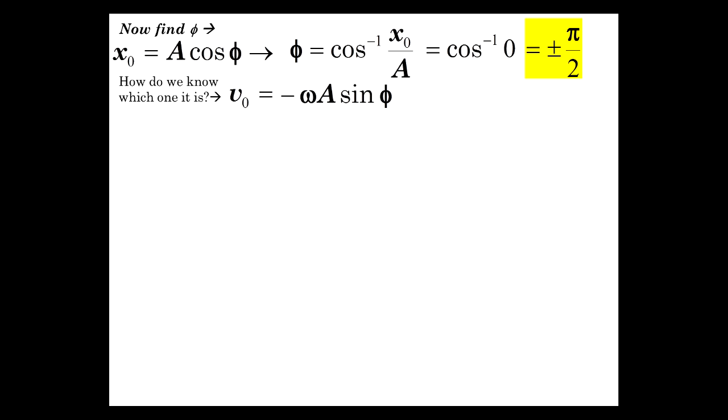And now let's find the phase angle phi. At x0, we have omega t is 0, and thus we have that x0 is A cosine of phi. So phi is inverse cosine of x0 over A, and that's inverse cosine of 0, because x0 is 0. So that's plus or minus pi over 2. Now, how do we know whether it's plus pi over 2 or minus pi over 2? We can obtain that by considering the velocity, which is minus omega A sine of phi. v0 is, remember, v0 is the velocity at t equals 0.